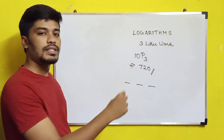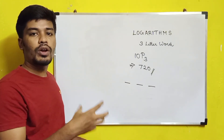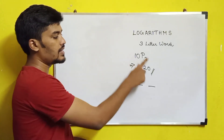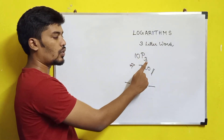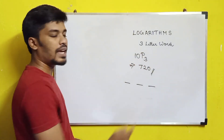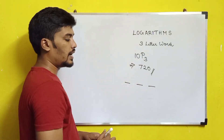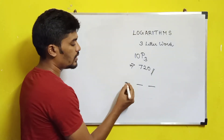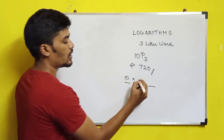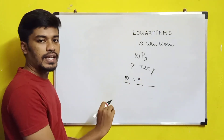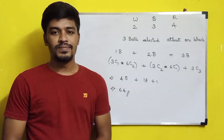Since we are arranging letters, we use permutation. The total number of letters in LOGARITHMS is 10, so we calculate 10P3. The shortcut: the first letter can be any of 10, the second any of the remaining 9, and the third any of the remaining 8. So 10 × 9 × 8 = 720. That is the answer to the second question.